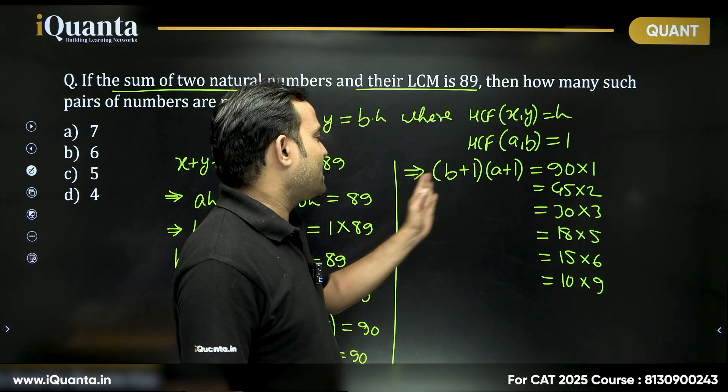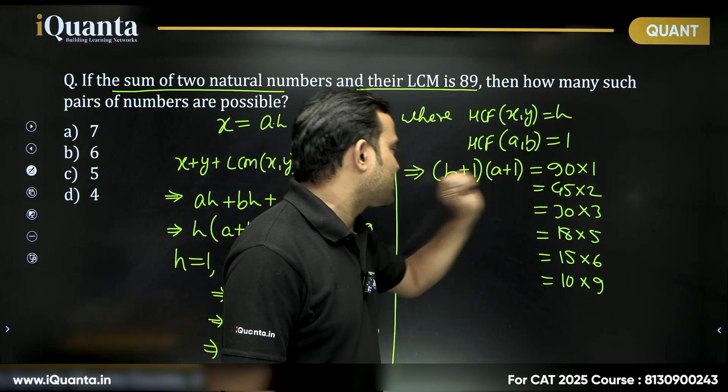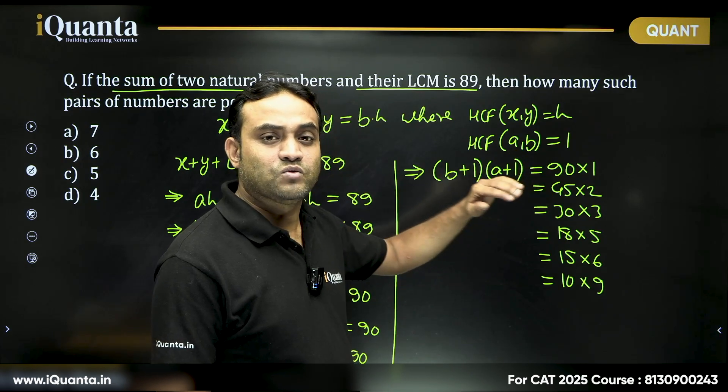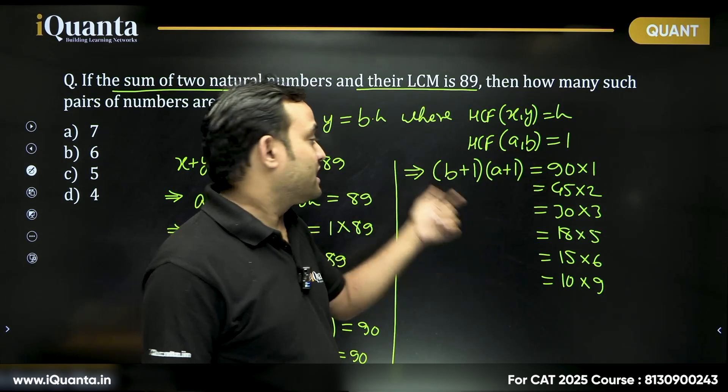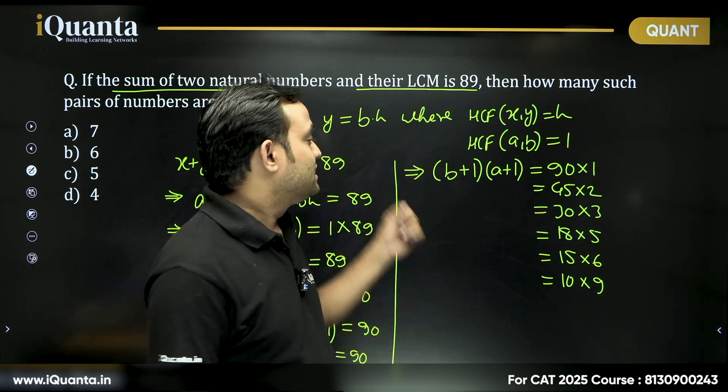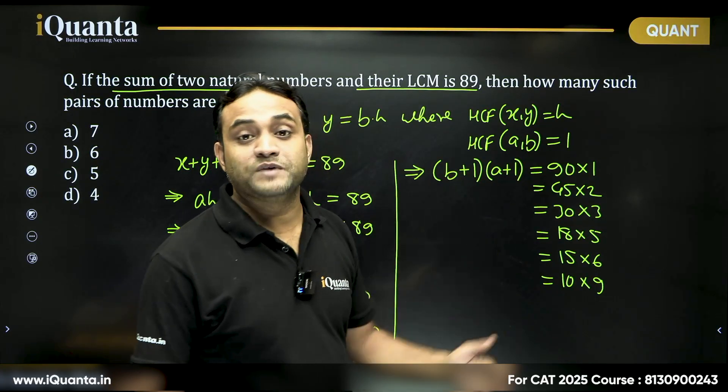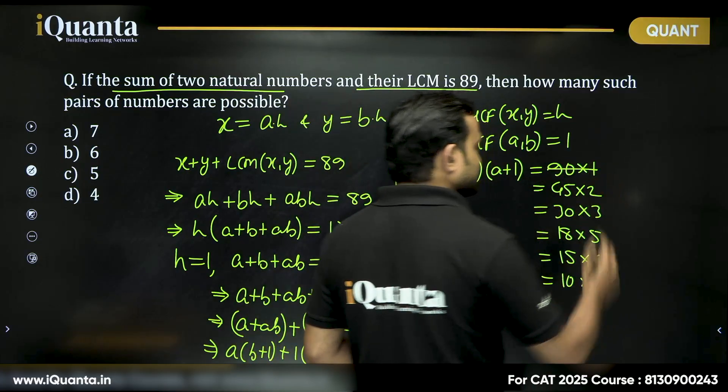What can I say about this product? B plus 1 will be greater than or equal to 1, A plus 1 will be greater than or equal to 1. But here A and B are both natural numbers. Can I say B plus 1 must be at least 2, A plus 1 must be at least 2? So we can cancel out this case.